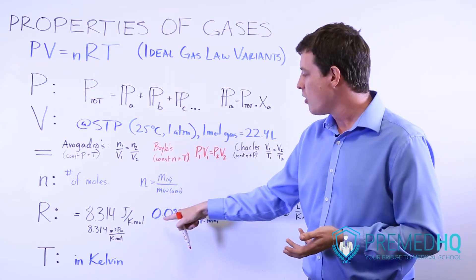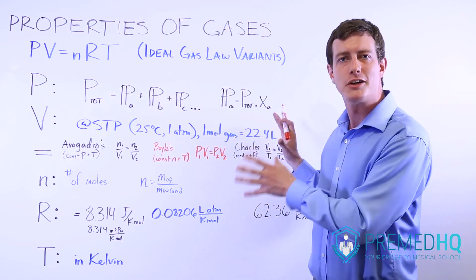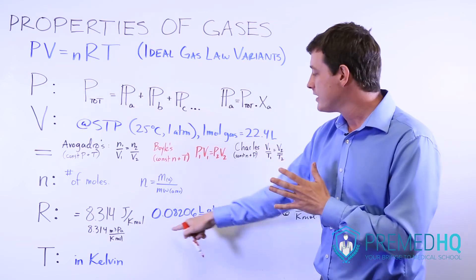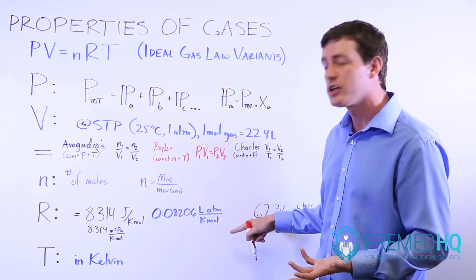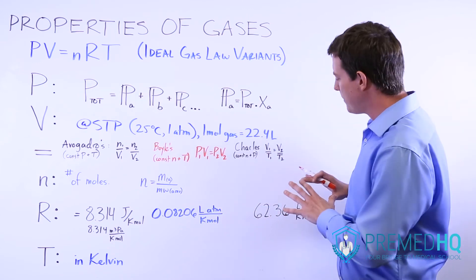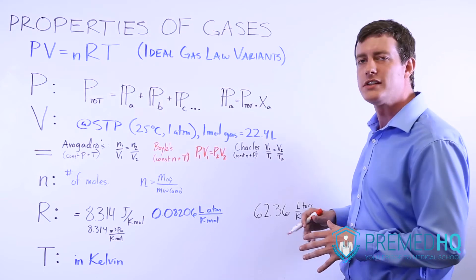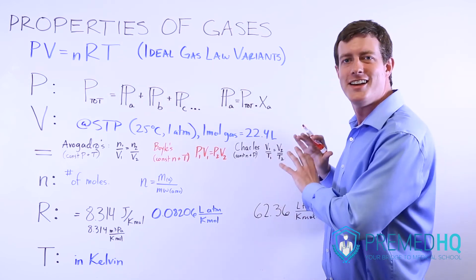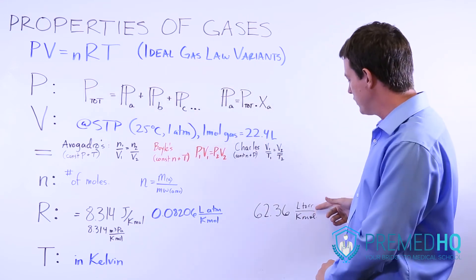R can also be expressed as 0.08206 liters·atmospheres per Kelvin·mole — sometimes rounded to 0.0821 — which appears in osmotic pressure problems where osmotic pressure equals iMRT (i being the van't Hoff factor, M molarity, R the gas constant, T temperature in Kelvin). A more obscure form is 62.36 liters·torr per Kelvin·mole, used when pressure is given in torr. This one would typically be provided rather than memorized.